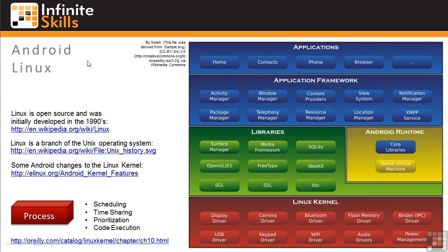Let's look at a little more detail about Linux. Not only is Android built on the Linux platform, but the key element of app action — the process — is a Linux capability. Linux is open source software, initially developed in the 1990s, and is a branch of the Unix operating system. Some changes have been made to the Linux kernel to support Android, but these are relatively small compared to the size of overall Linux.